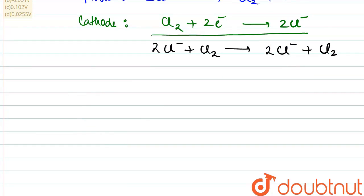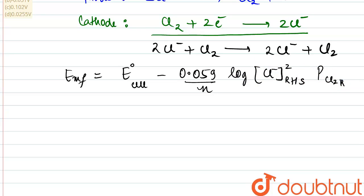According to the Nernst equation, what would be the expression for the EMF of the cell? That will be equal to E° of cell minus 0.059 divided by n into log the concentration of chloride ions which are there on the right-hand side to the pressure of the chlorine gas which is there again on the left-hand side.